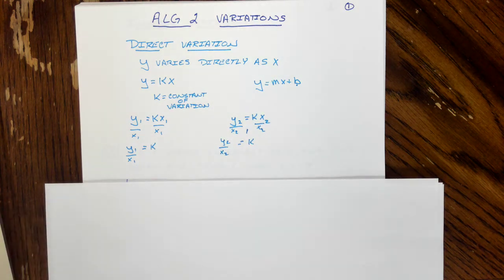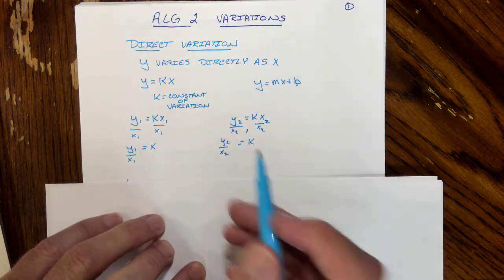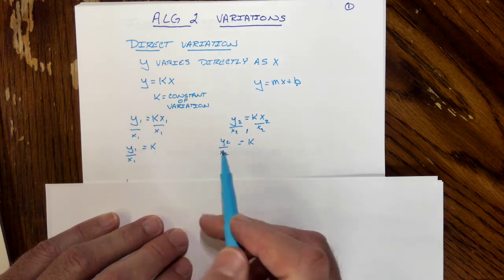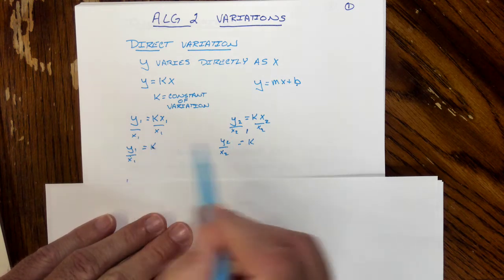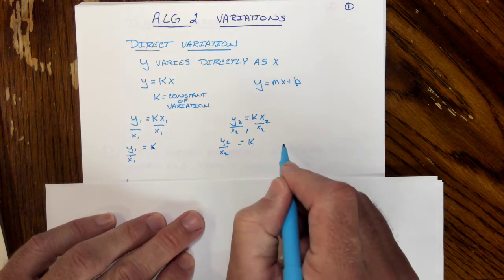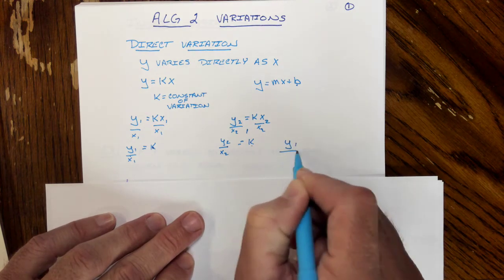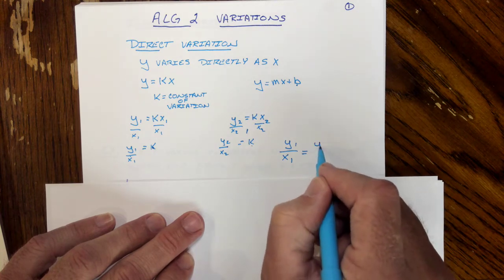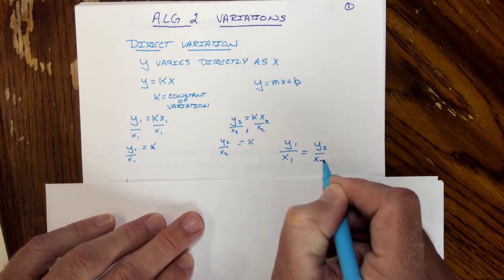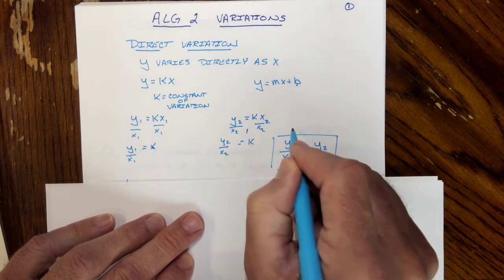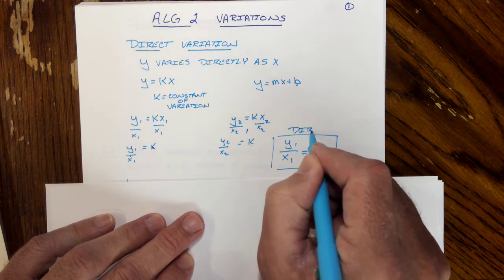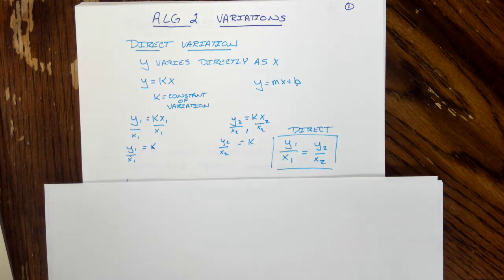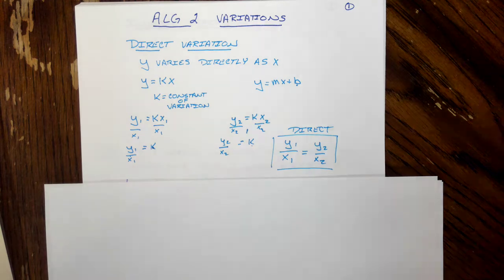Point being is this: K is the same in both of these. So if I'm going to do a direct variation, instead of solving for K and doing all these other steps, I'm going to remember that this is equal to K. This is equal to K. If I can remember that proportion, I set the problems up and I'm in business. So let's take an example and work with it.